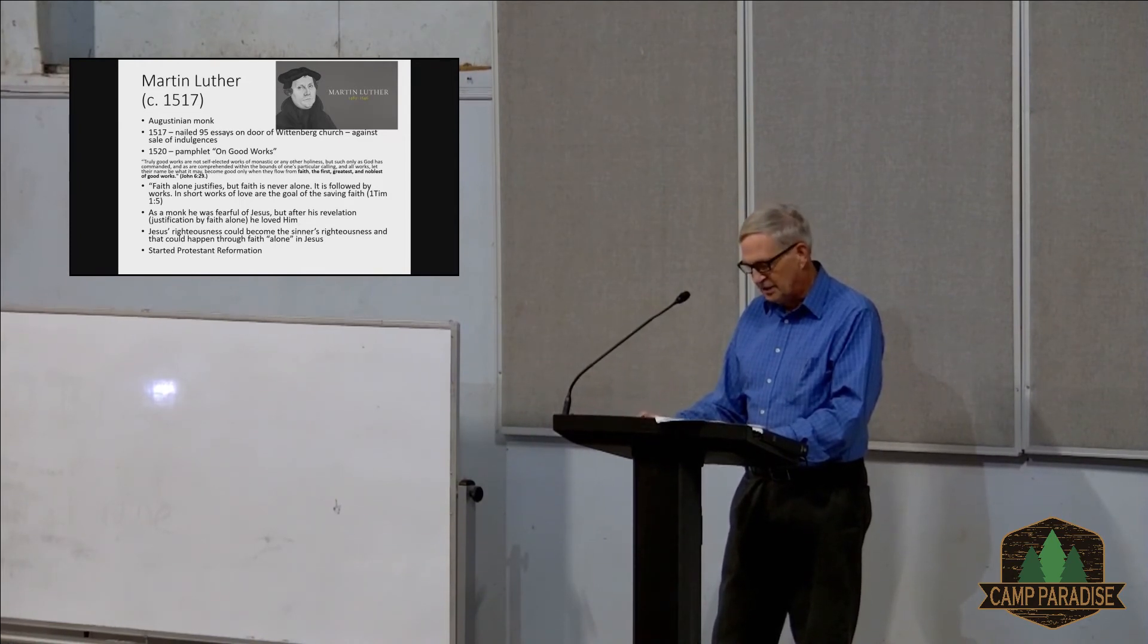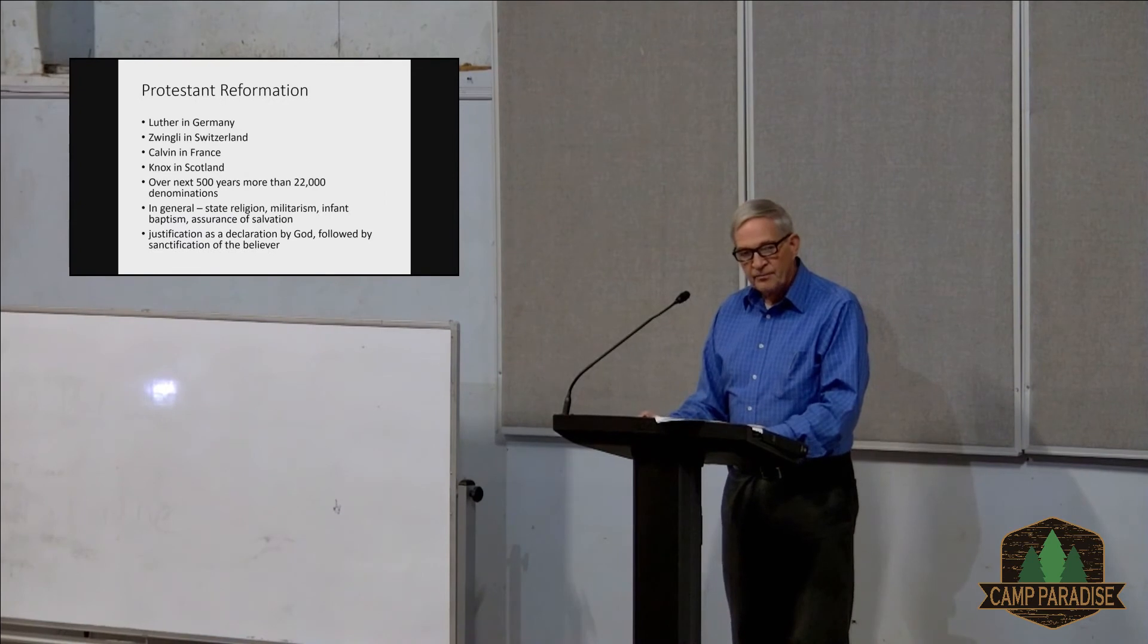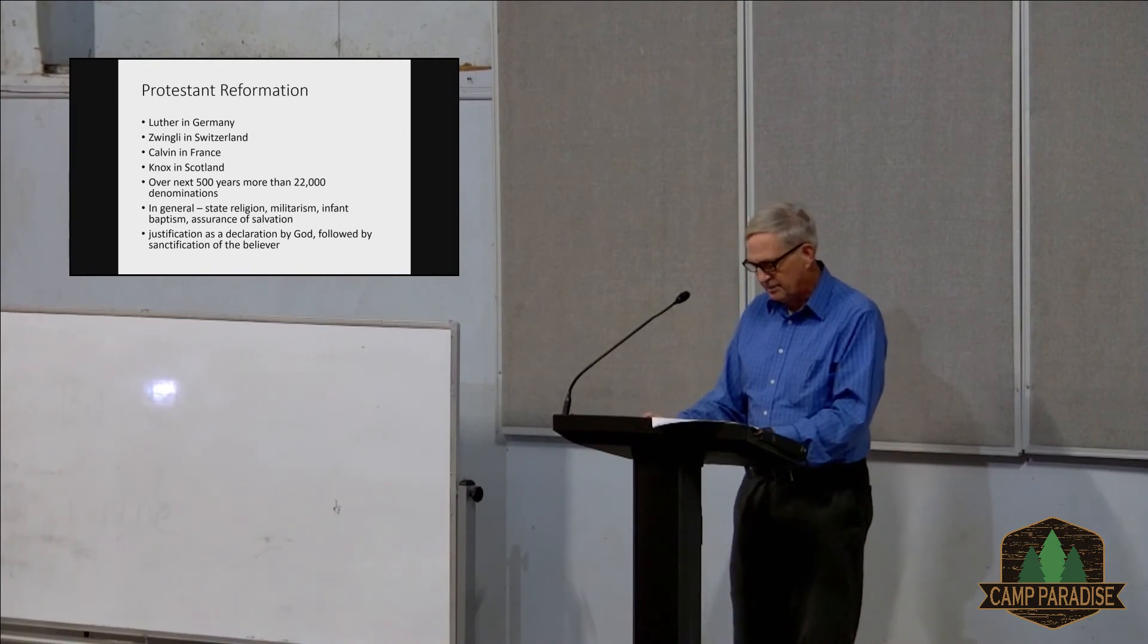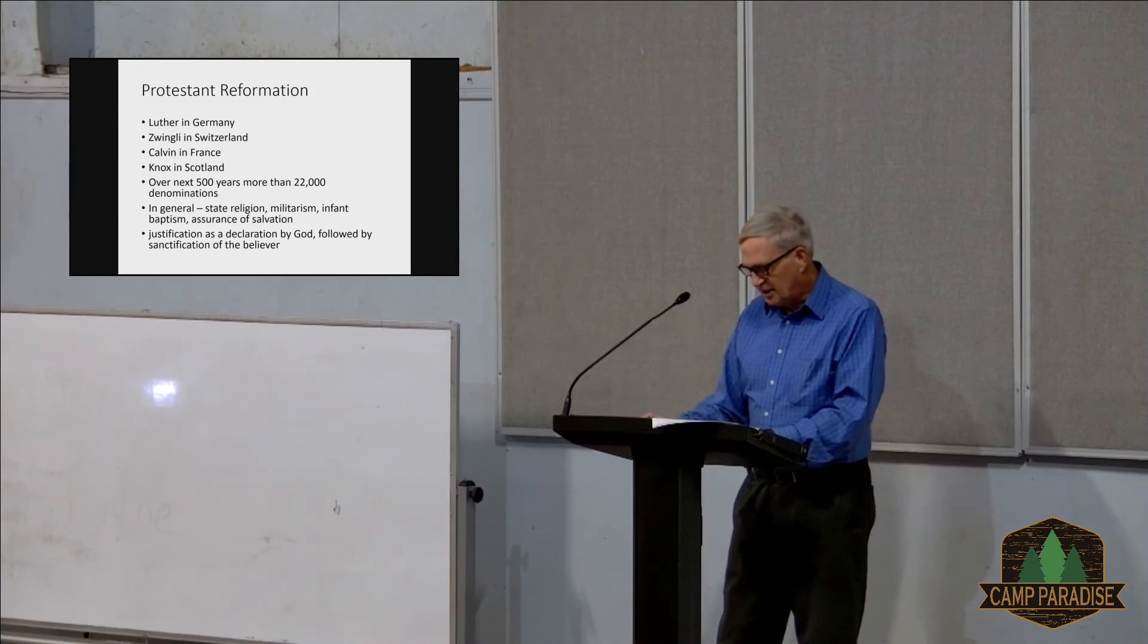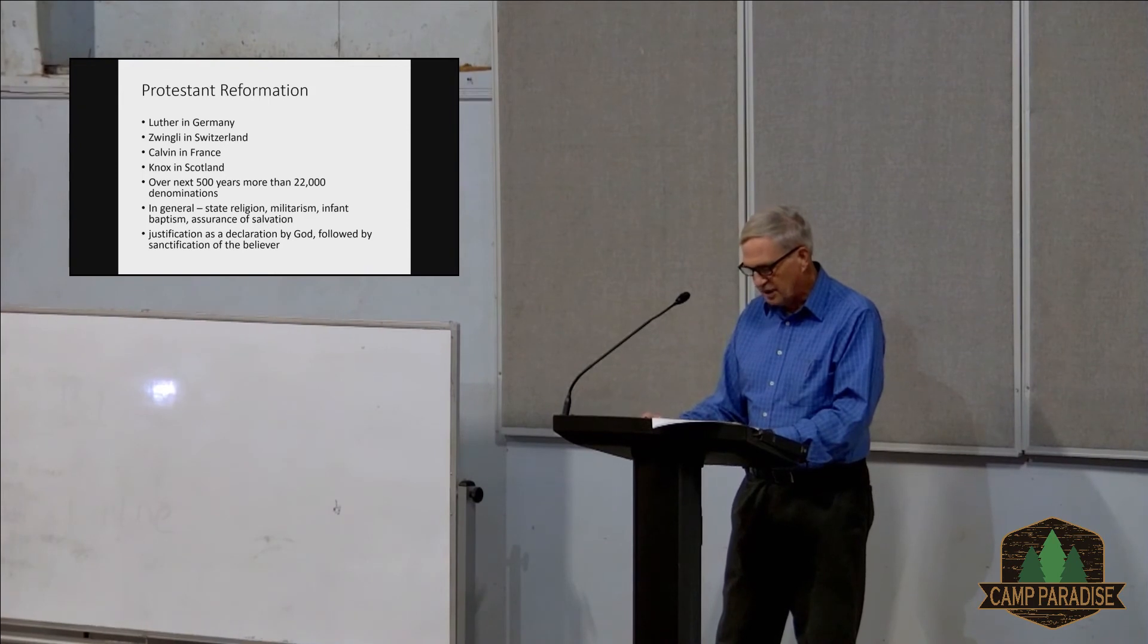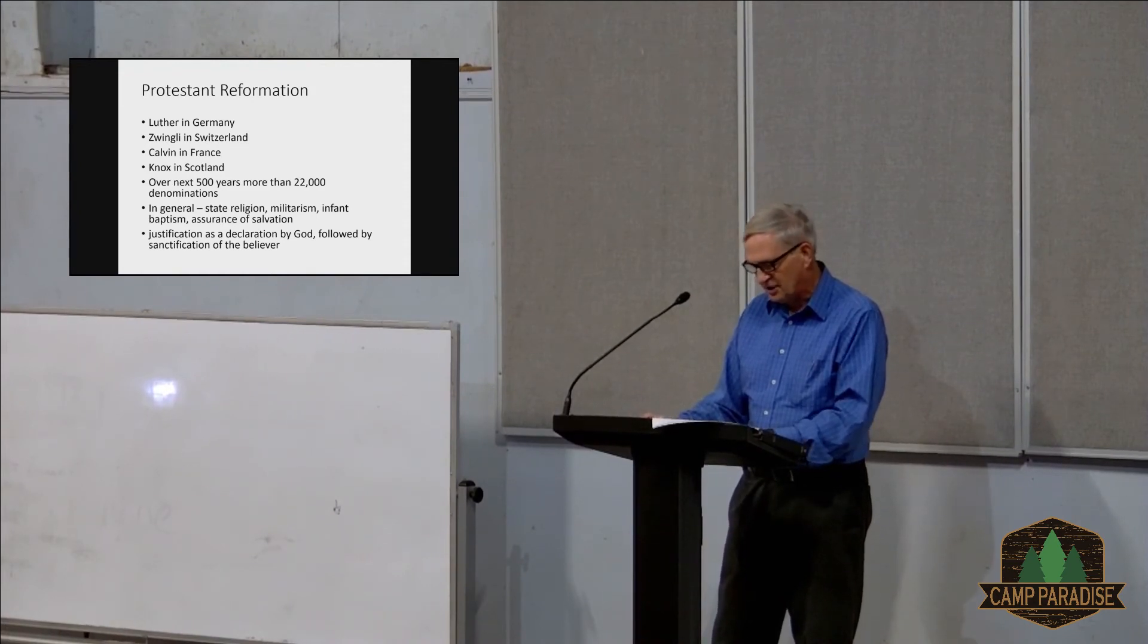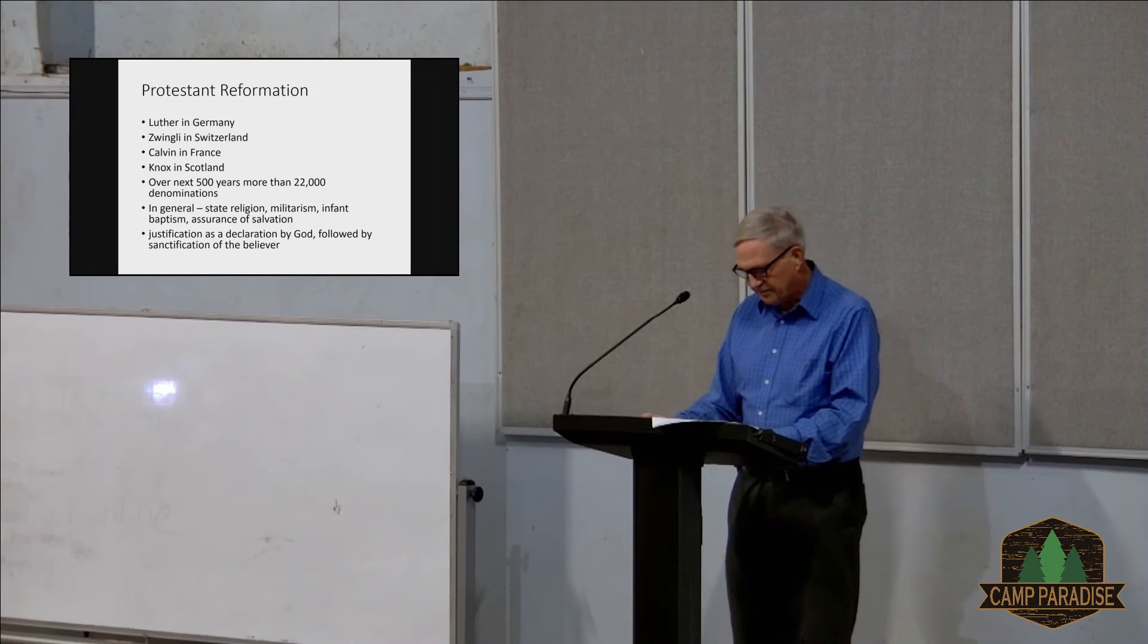Although Luther had only intended to correct the errors and excesses of the Catholic Church, it soon became apparent that a completely new denomination, Lutheranism, was needed. So this was the start of the Protestant Reformation. Zwingli in Switzerland, Calvin in France, Knox in Scotland built upon Luther's lead with their own modifications. The denominations multiplied as disagreements in doctrine grew up within each Protestant group. Over the next 500 years, up to the present time, some have claimed that as many as 22,000 Christian denominations have arisen.